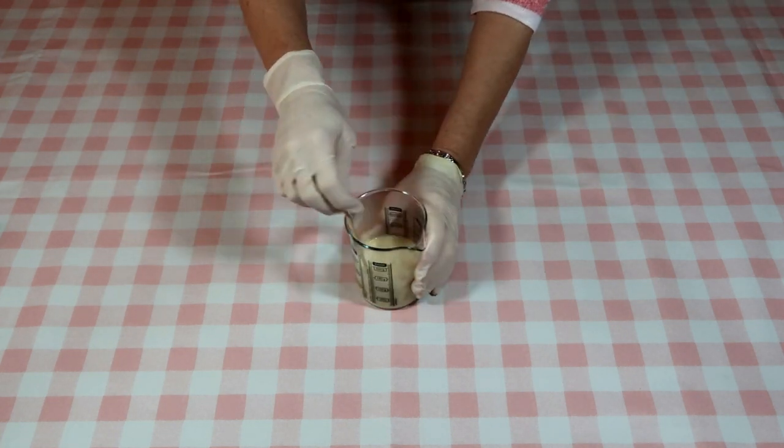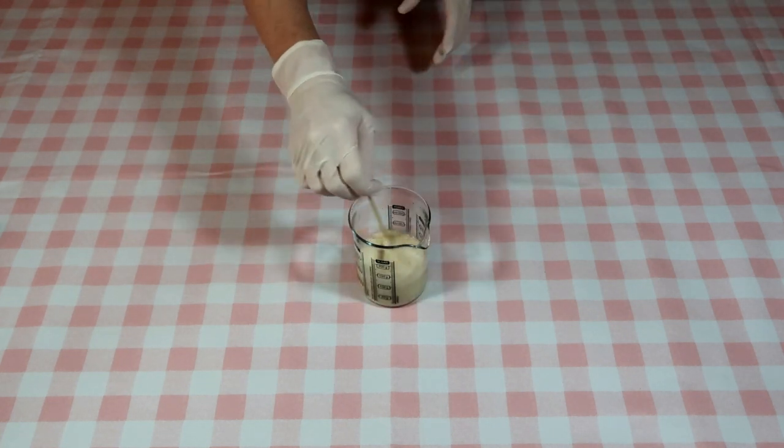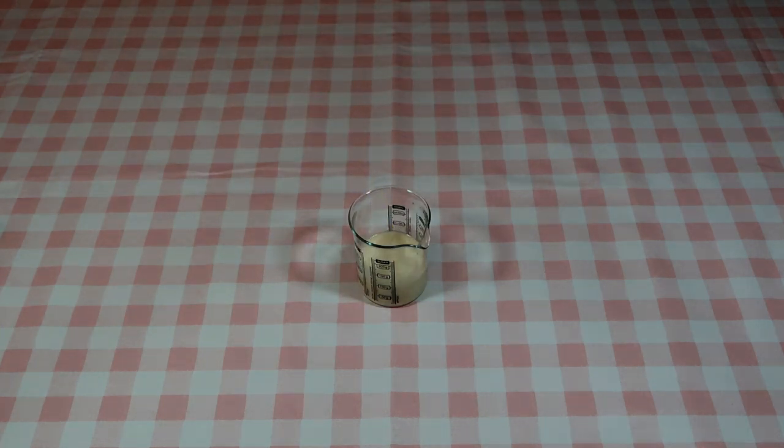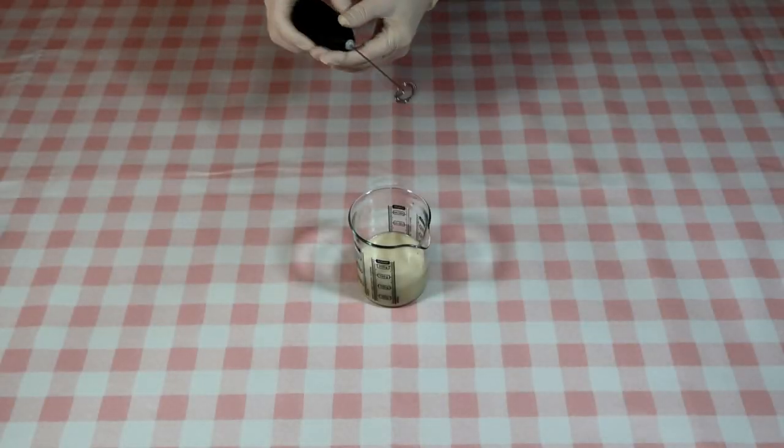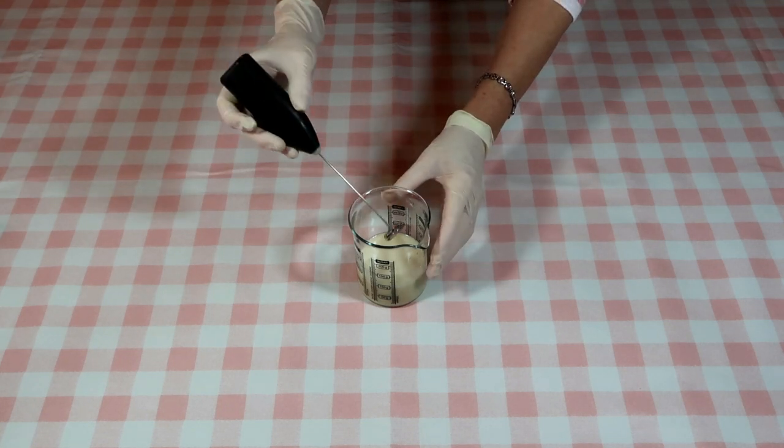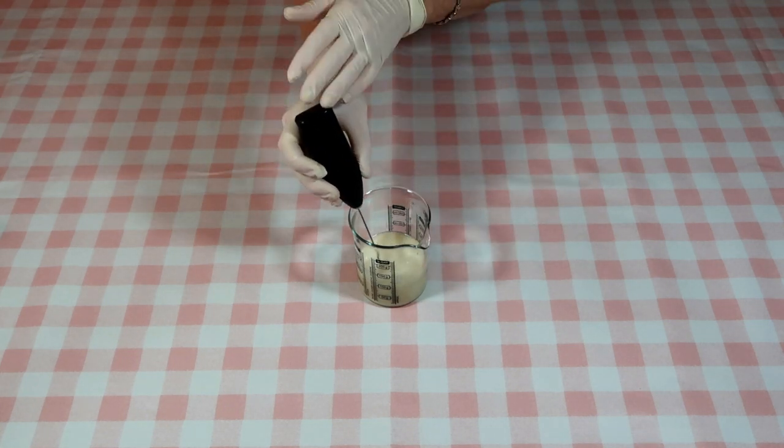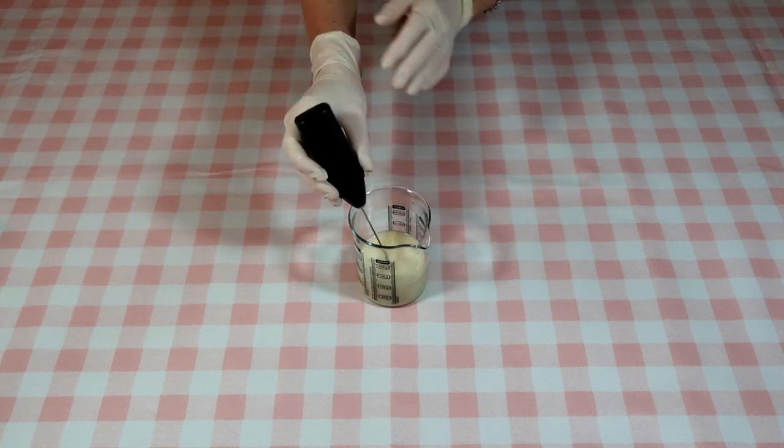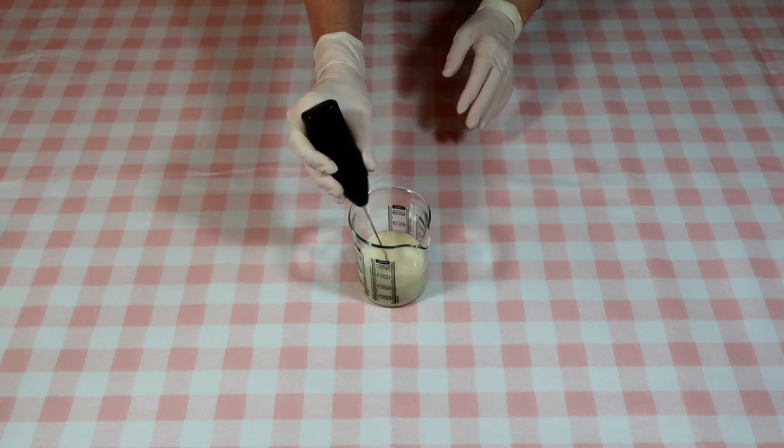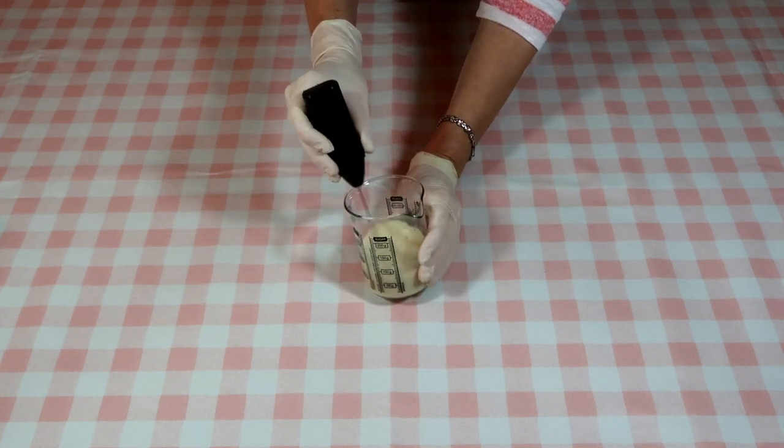You can use a spoon or a whisk. If you are using a whisk, try to keep it down to prevent air bubbles. Stir until the cream begins to thicken and has a nice creamy texture. You may find it easier to stir for a minute and let it stand for a minute.